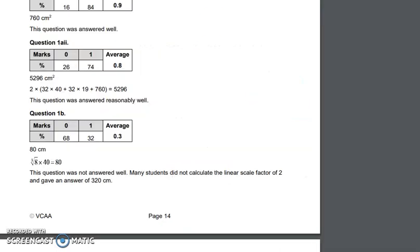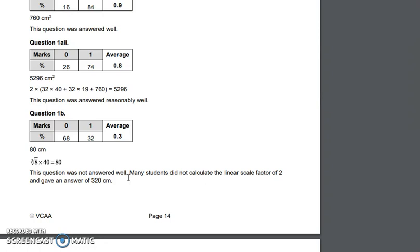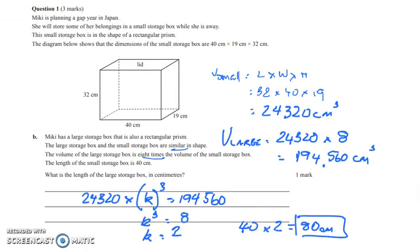Looking at the assessor's comments, question 1b only 32% of the cohort managed to do this. This question wasn't answered very well. Many students did not calculate the linear scale factor of 2 and gave an answer of 320. So hopefully showing this example will help you know how to find the k factor value and when to apply it. Thank you.